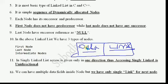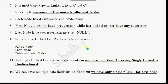So that is what it means: we can have multiple data fields inside a node, but we have only a single link for the next node. These are some important points about singly linked list that you need to remember.